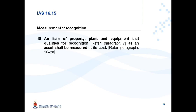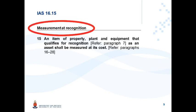Paragraph 15 of IAS 16, under the heading 'Measurement at Recognition', refers to initial measurement. An item of property, plant and equipment that qualifies for recognition — meaning you have answered the question that you may recognize it as PPE — shall be measured at its cost. All PPE items are initially measured at cost.